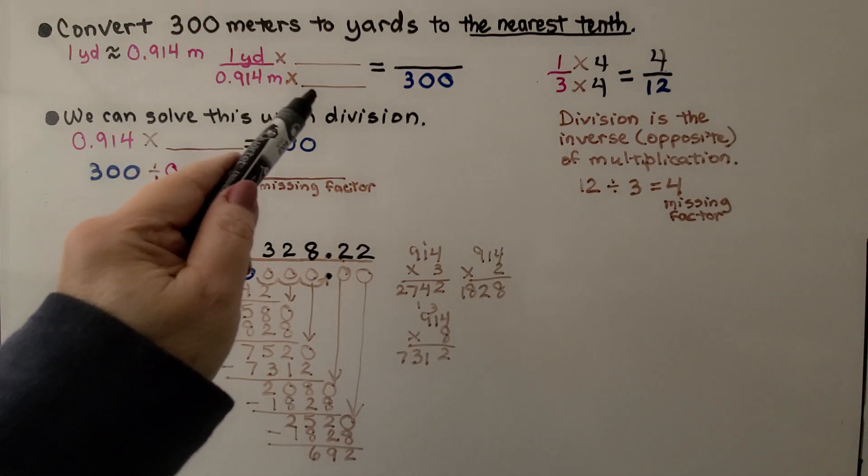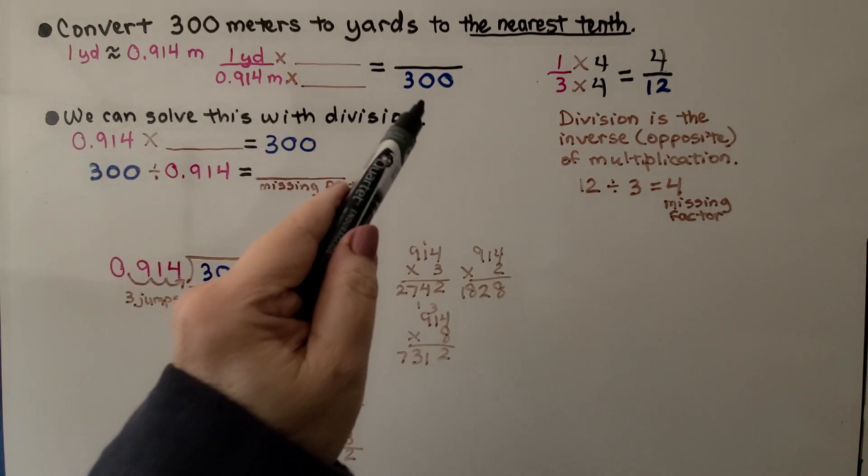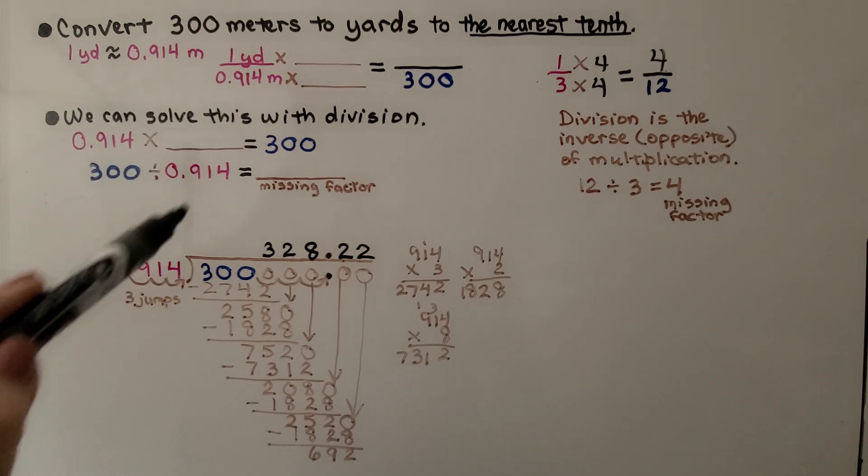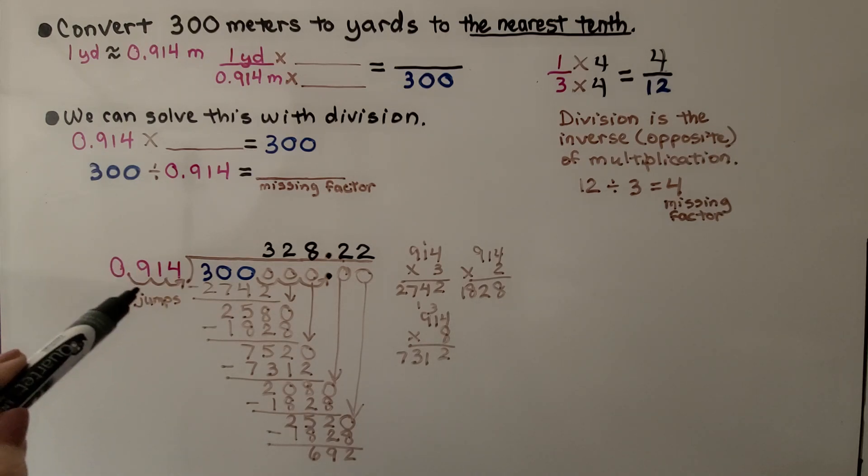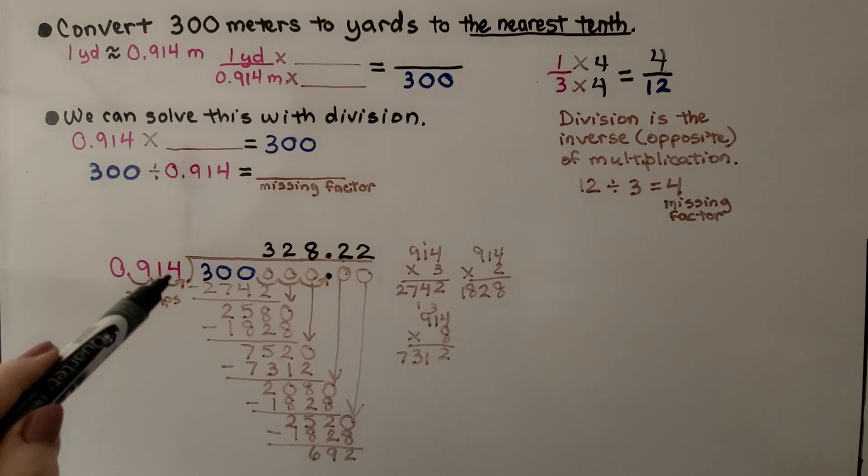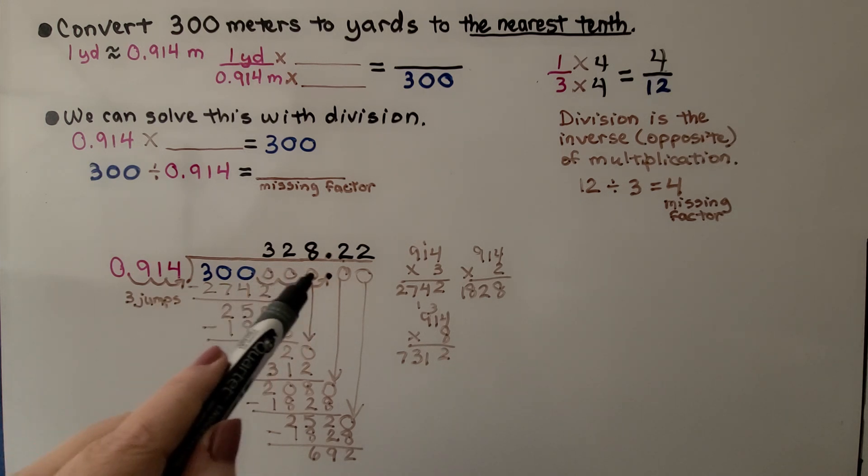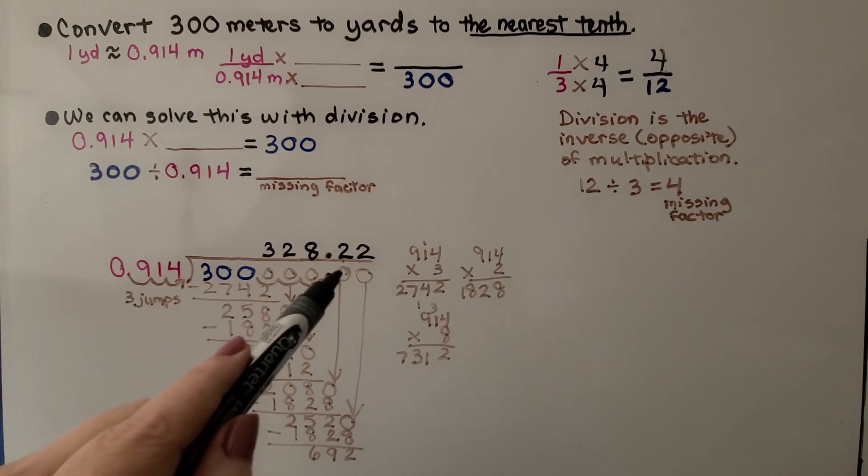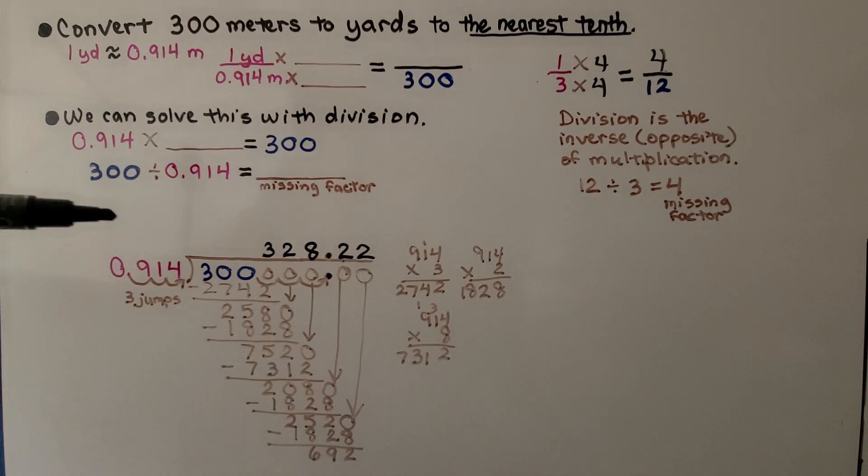We don't know what this factor is that we need to multiply the meters by to equal 300. So we're going to do 300 divided by 0.914. And if you remember your decimal division, we move the decimal three jumps to put it back here. One, two, three, which means we need to move it three jumps for the 300. And since it's right here, we're going to go one, two, three. We're going to put some zeros in as placeholders.